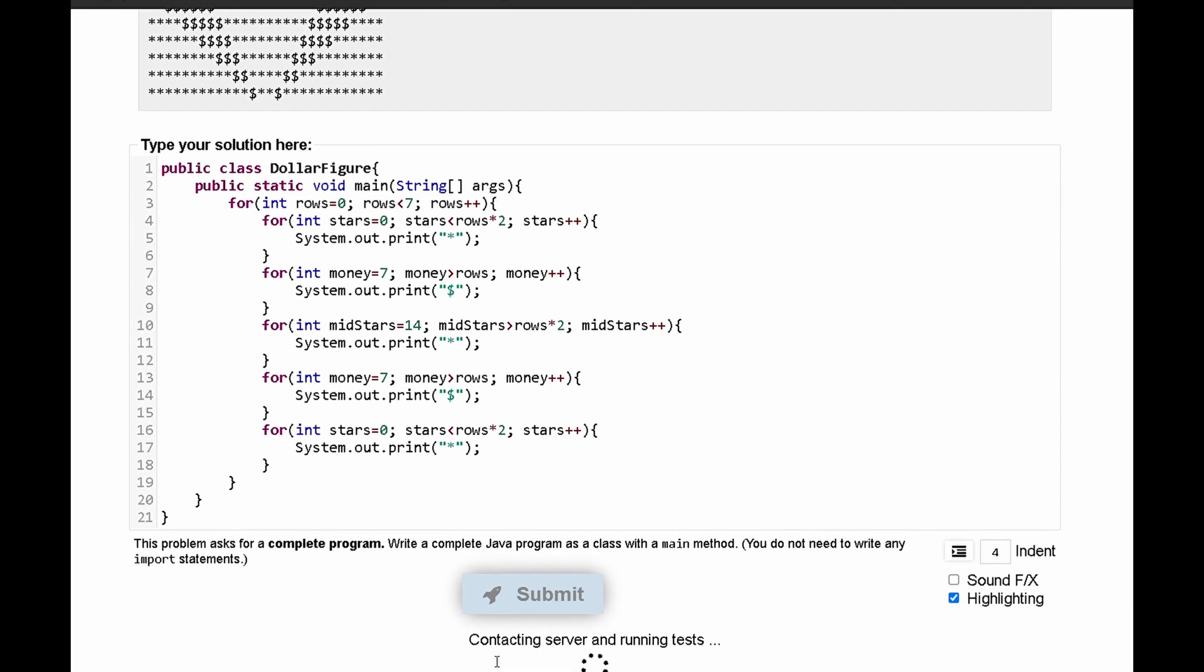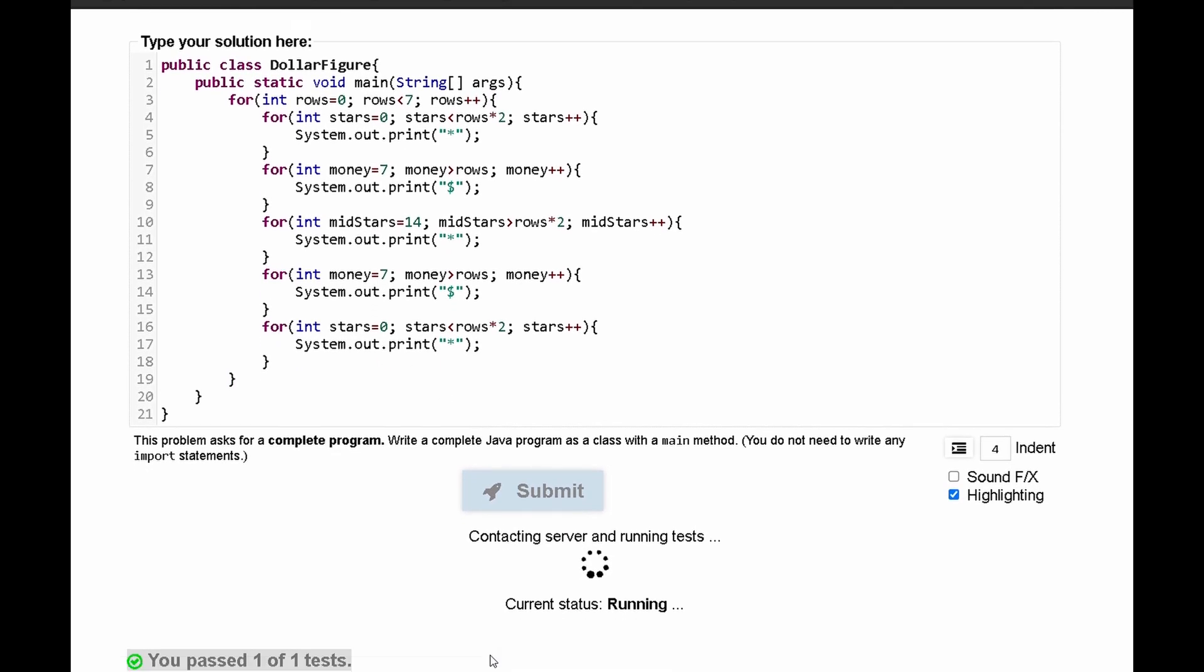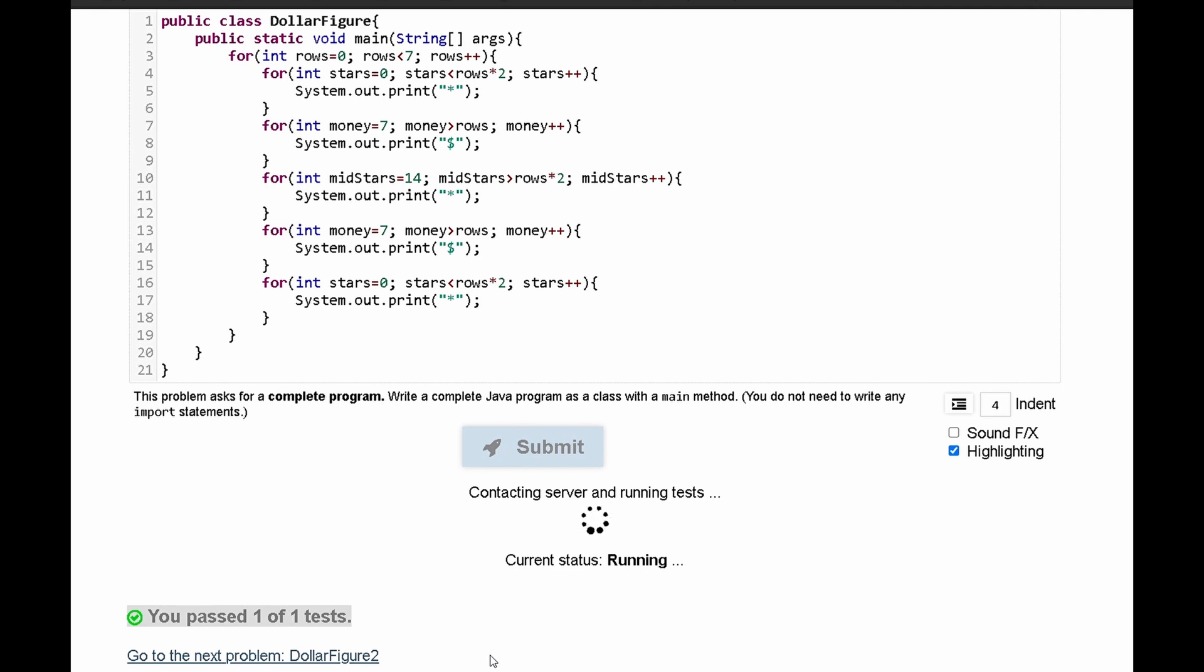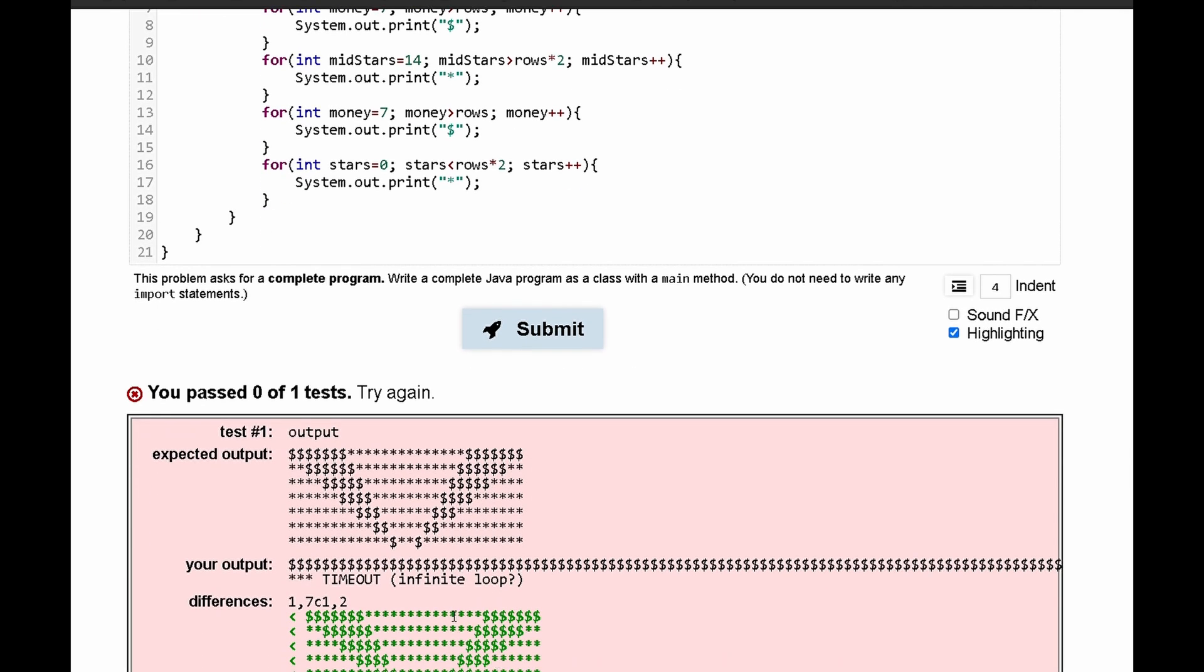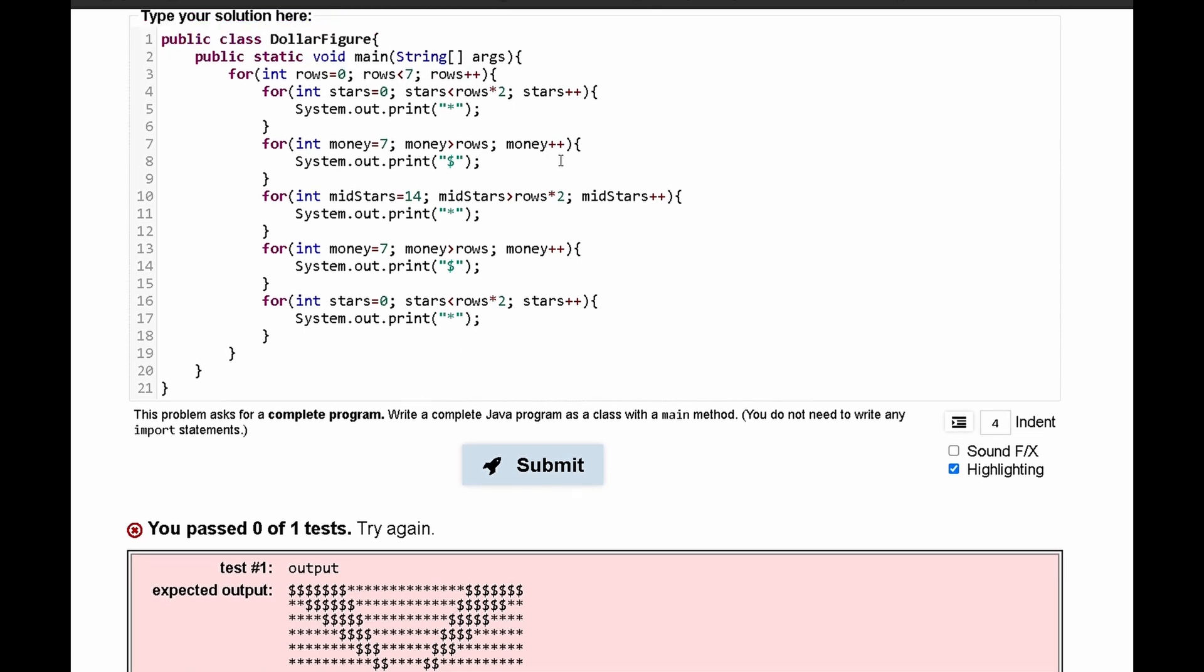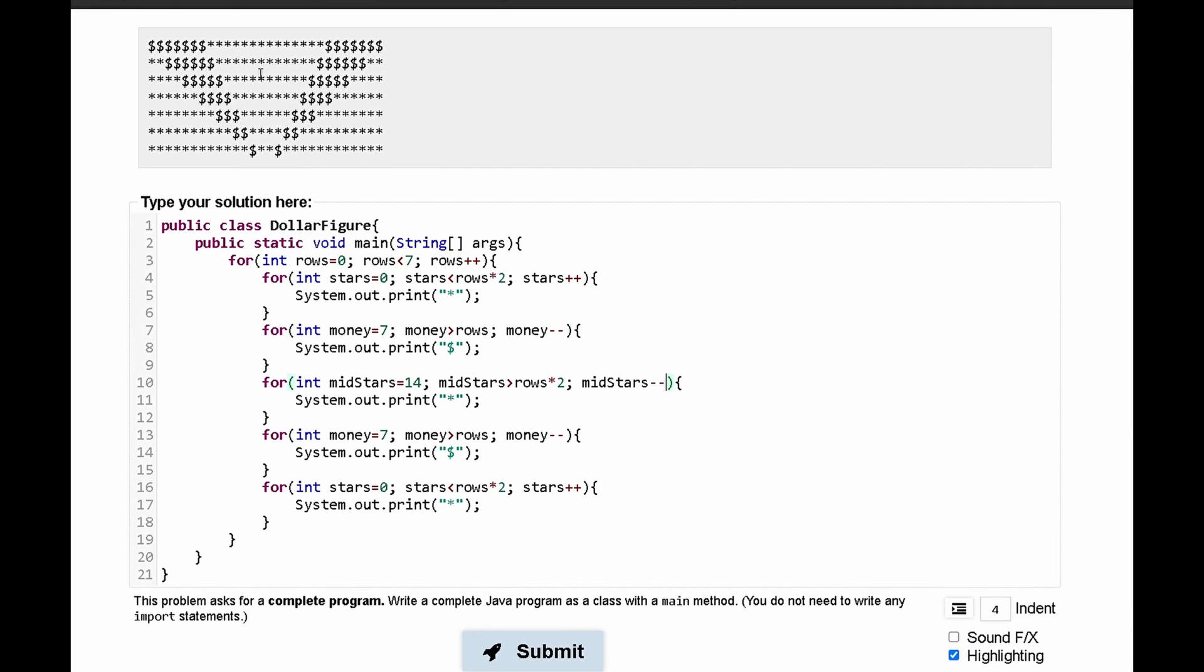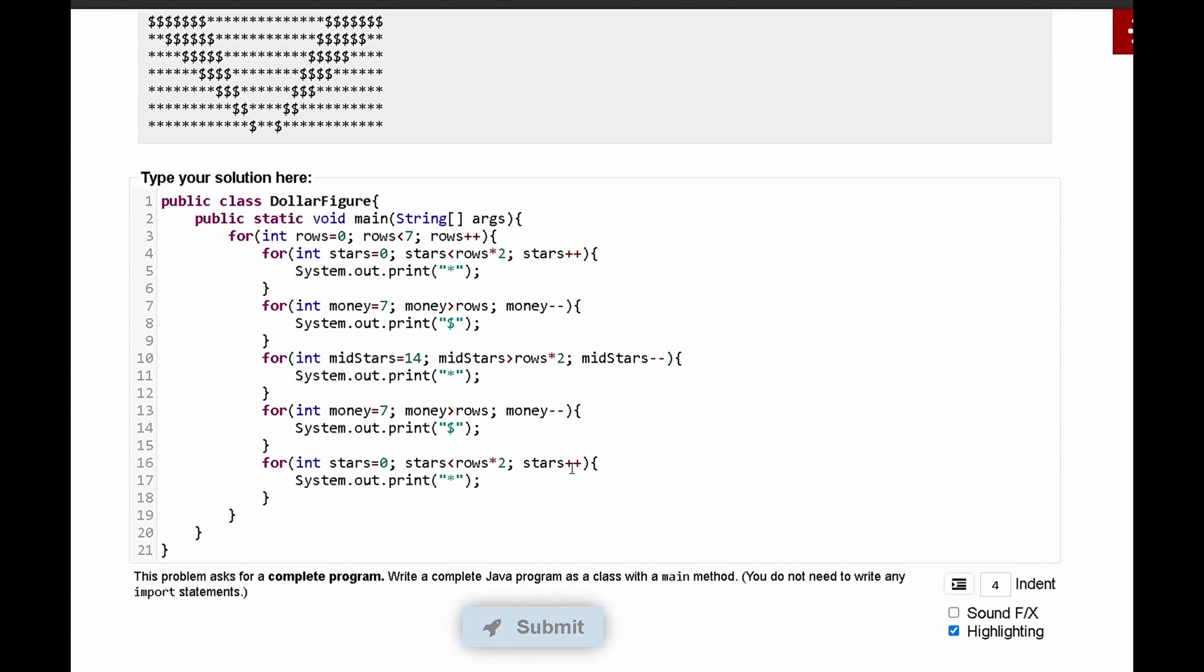If we submit this we can find out. We see that we have an infinite loop and that is because we need to actually decrement this, because each line of code it is decreasing, so that is why we decrement it.